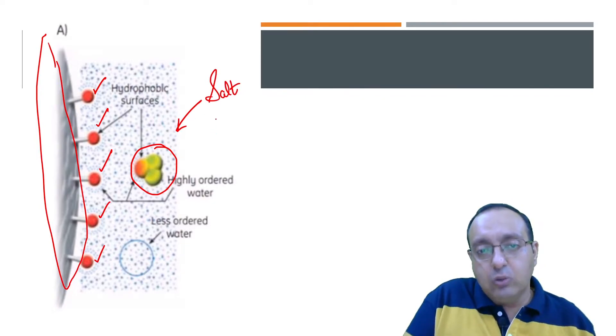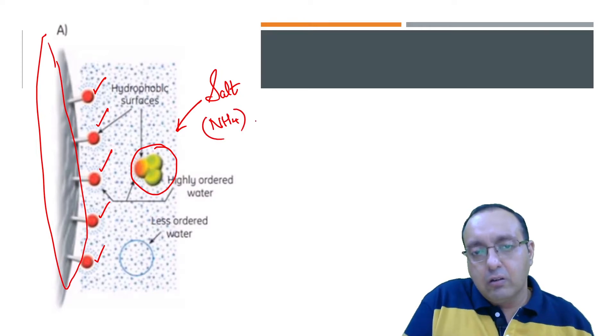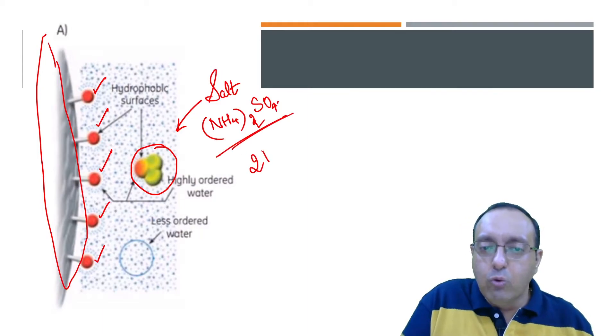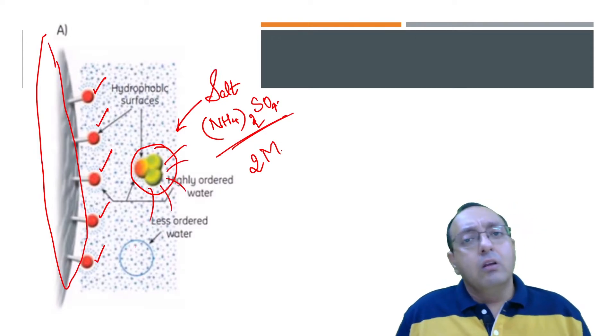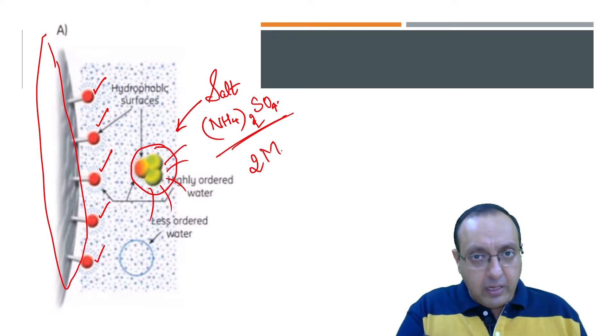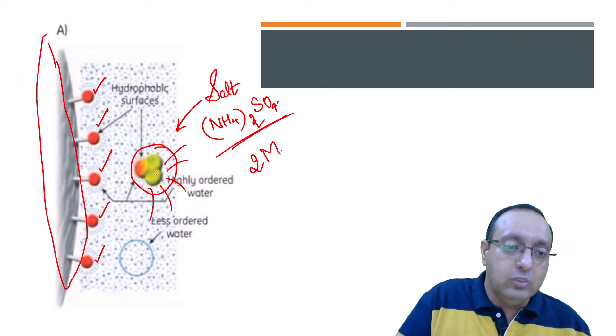Now what it will do is if we add a lot of salt, usually the salt which is chosen is ammonium sulphate. If we choose to add this lot of salt, usually two molar salt, what it will do is it will remove some of the water molecules from the protein. It will expose those hydrophobic areas. And now those hydrophobic areas will be forced to bind to these hydrophobic surfaces of the matrix.